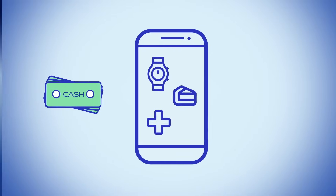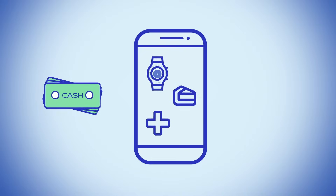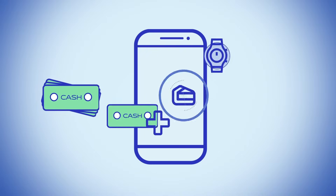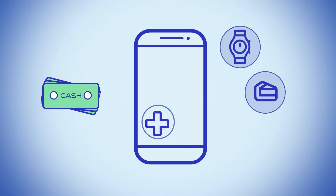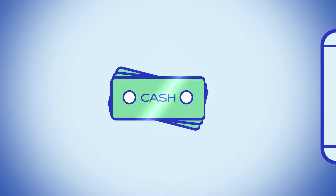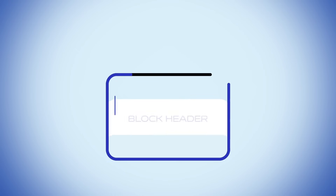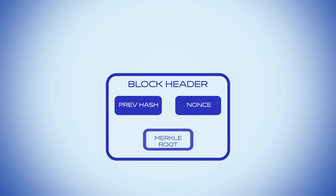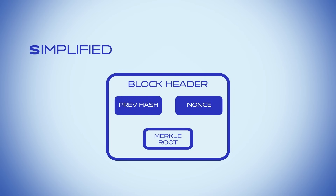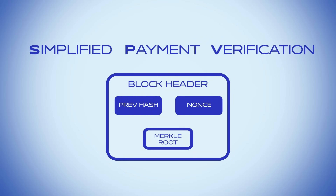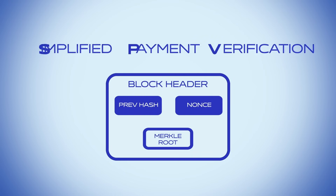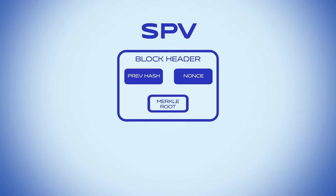We use cash every day to buy goods or pay for services. But how do you know if your cash is real? In a blockchain-based electronic cash system, this problem can be solved with a concept called Simplified Payment Verification, or SPV.